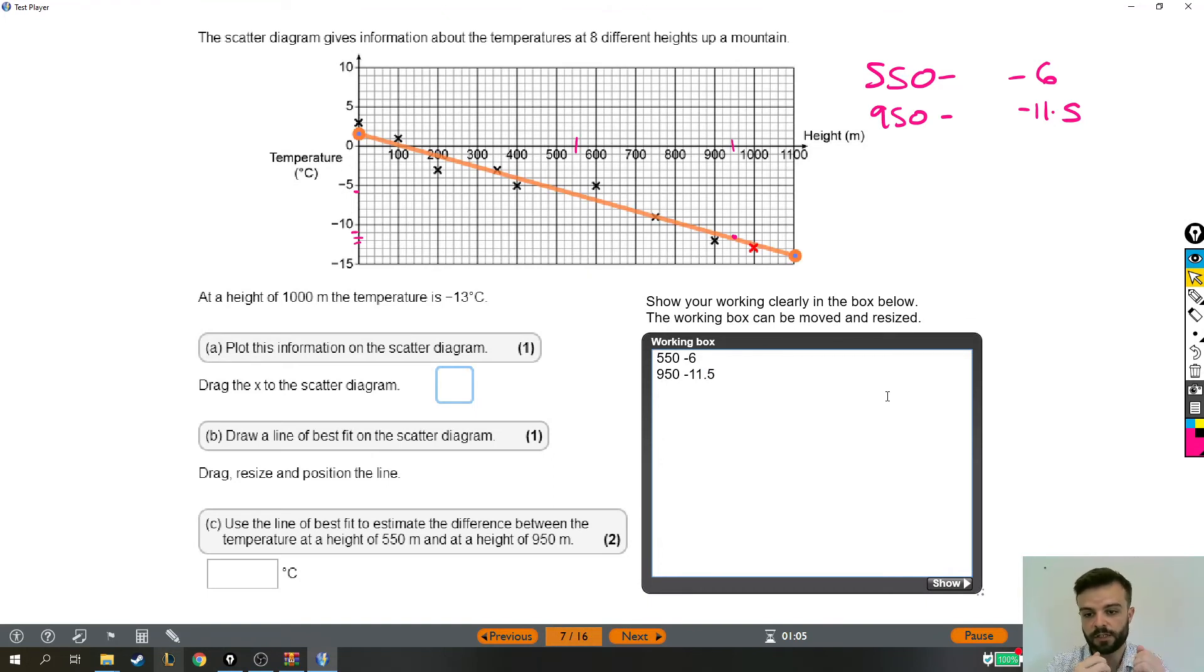Now, the question says use the line of best fit to estimate the difference between the temperature. So we're going to find the difference between those two numbers. How's best to do that? I think I'm going to choose a number line. I don't know if the calculator would be particularly helpful here. So a quick number line over here.